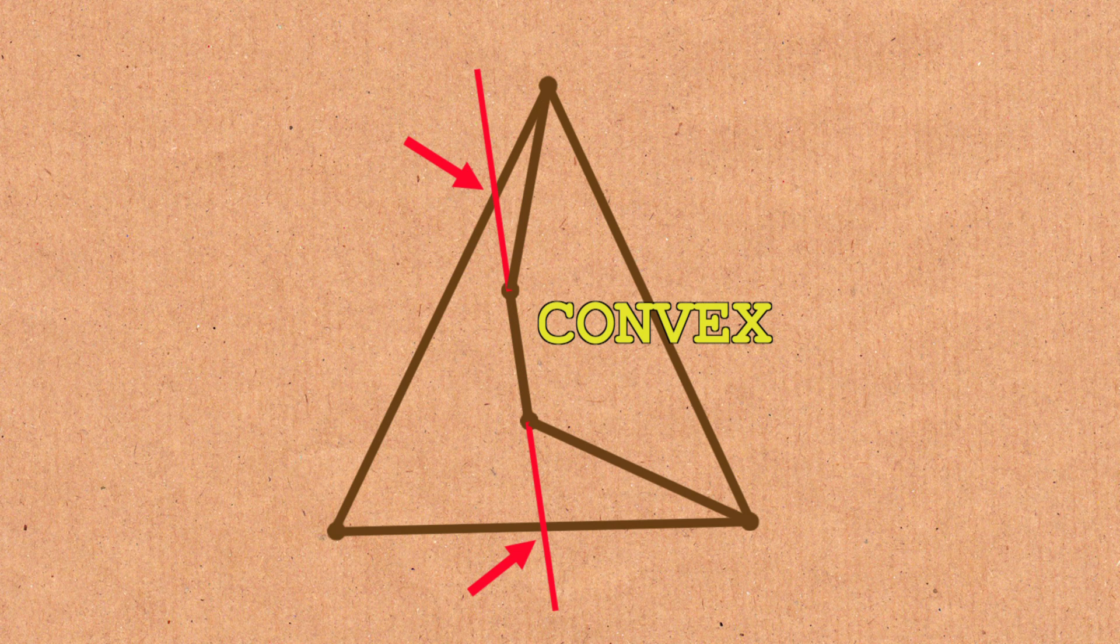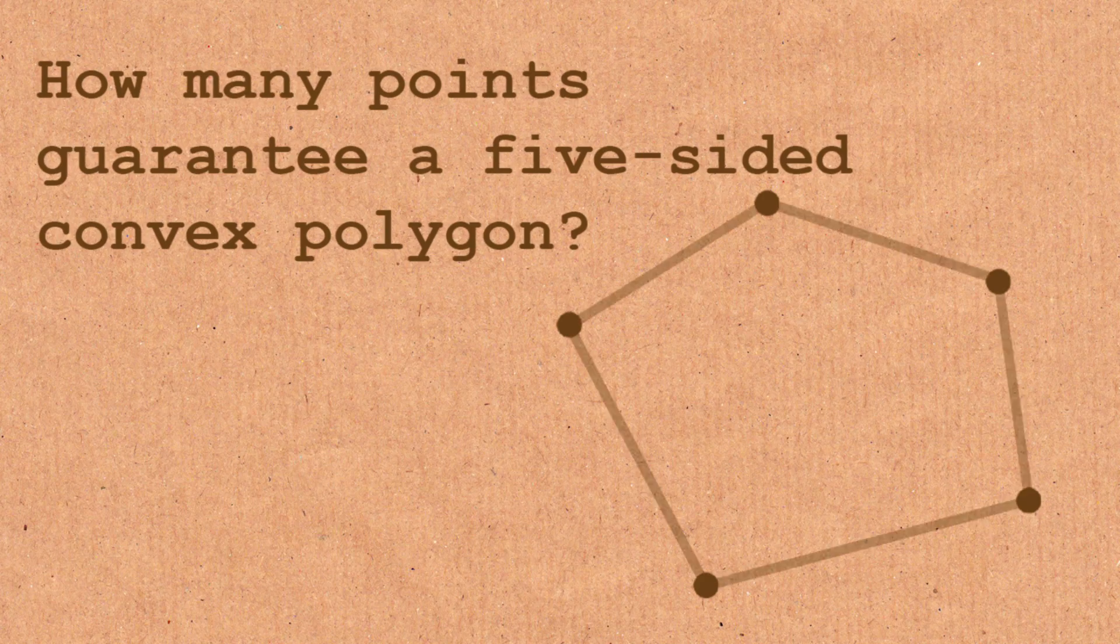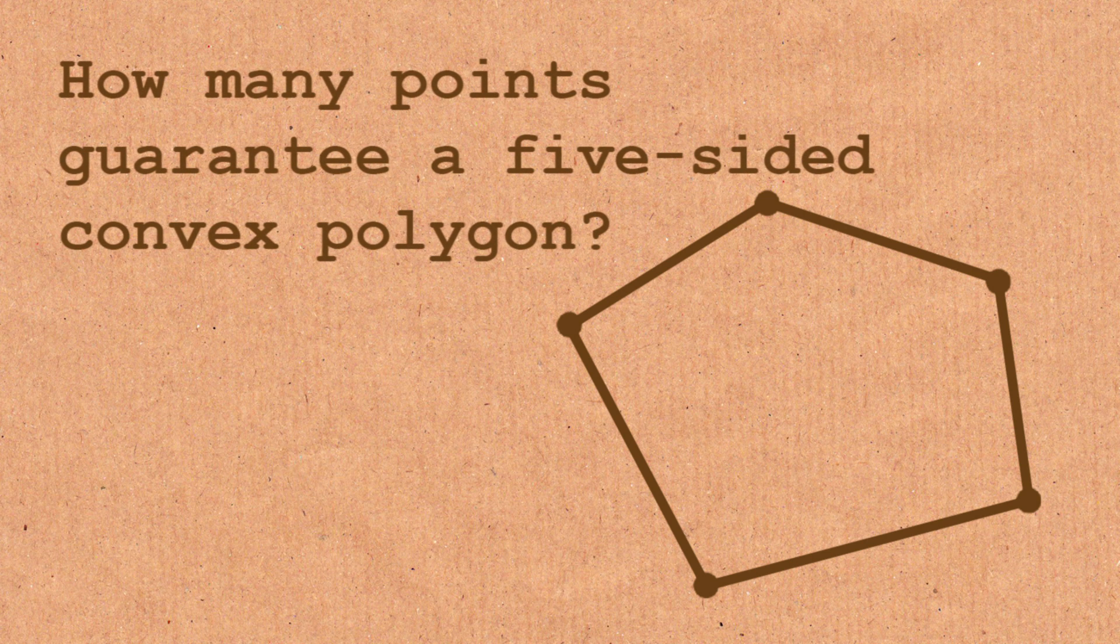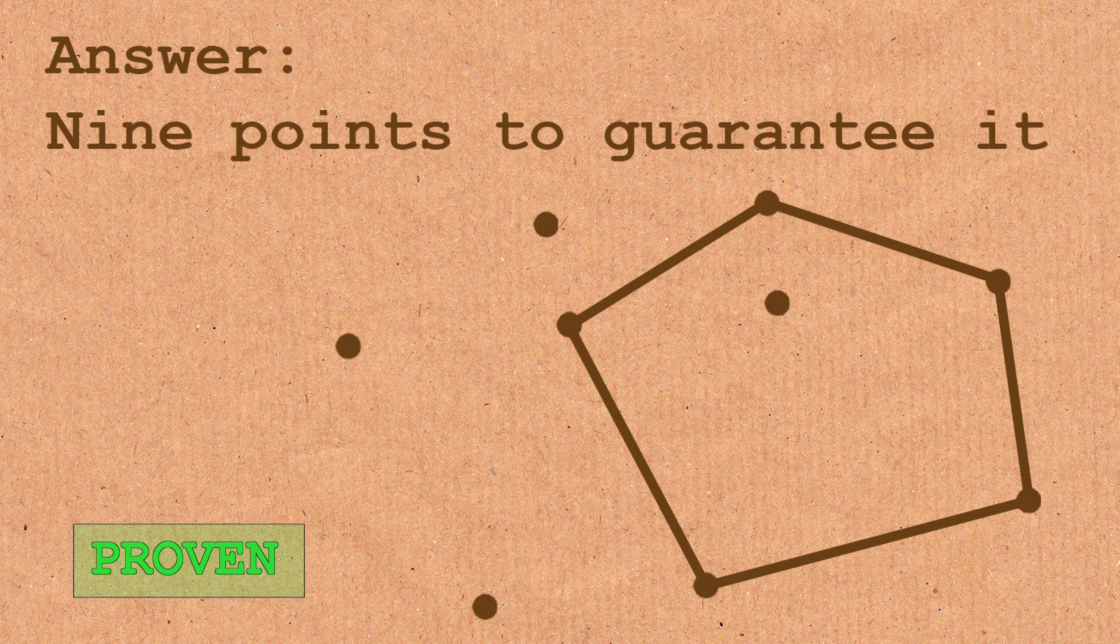So the question is, suppose you wanted not a convex four-gon, you wanted a convex five-sided figure. If you put enough points down, must you get a five-sided? Yes. And the answer is yes. If you put nine points down, no three in a straight line, you must form a convex five-sided figure someplace. And nine's the best possible.